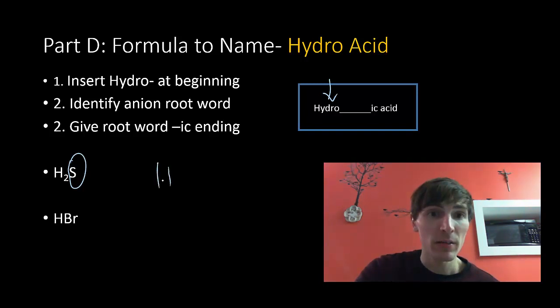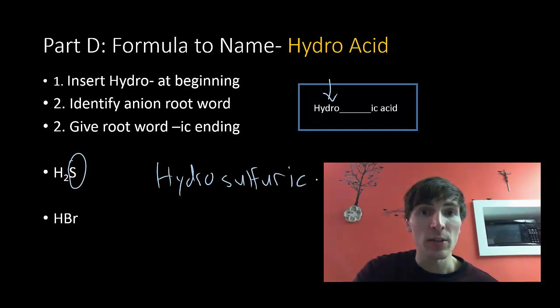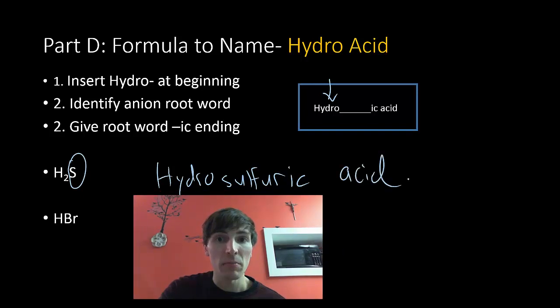So hydro, for this one here, hydro, we identify the anion root word and we give that root word the ic ending. So the root word is sulfur, and we change the ending to ic, hydrosulfuric acid.